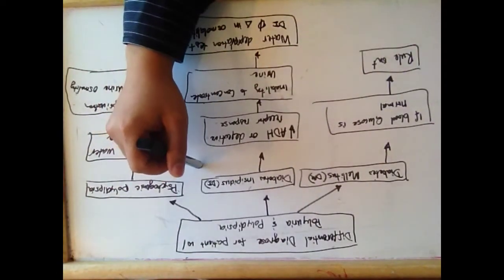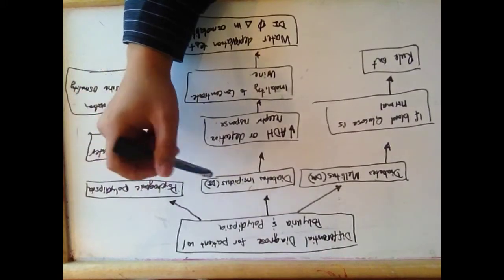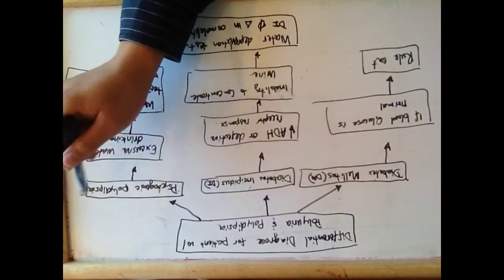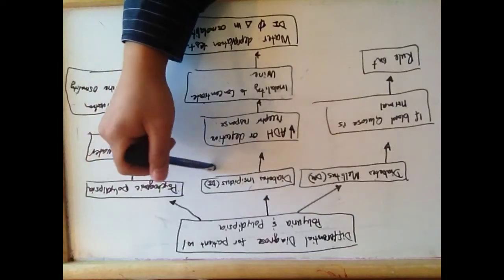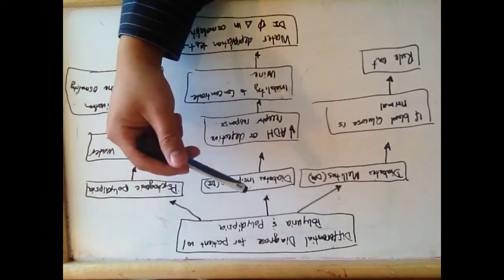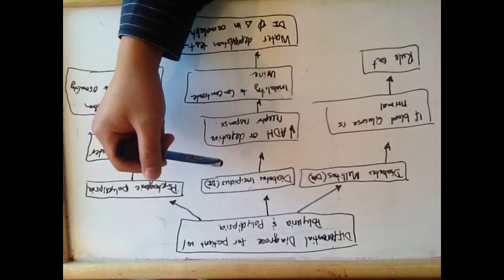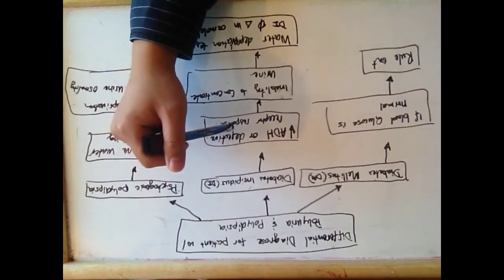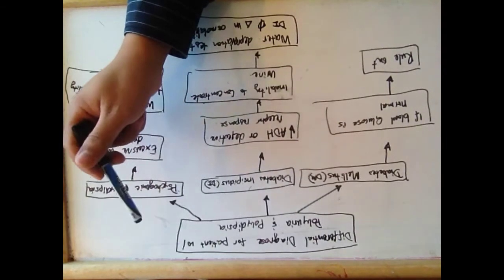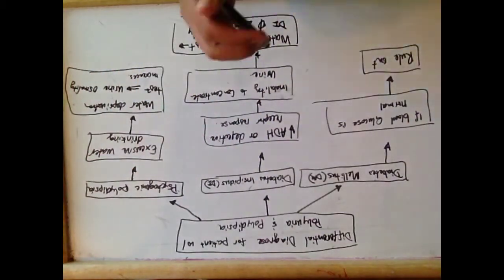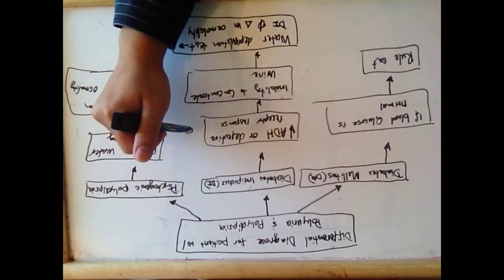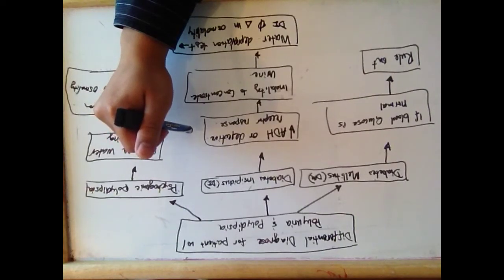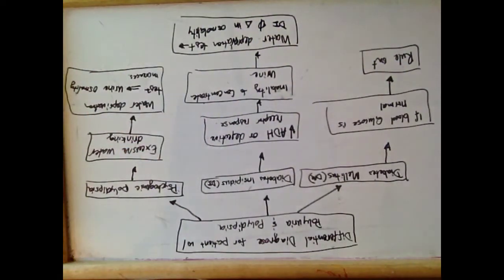The other choices are between diabetes insipidus and psychogenic polydipsia. In diabetes insipidus, patients either have a decrease in the production of ADH — antidiuretic hormone — or a defective receptor response in the kidney. So even if ADH is present, the kidney doesn't concentrate urine, meaning urine is always diluted.